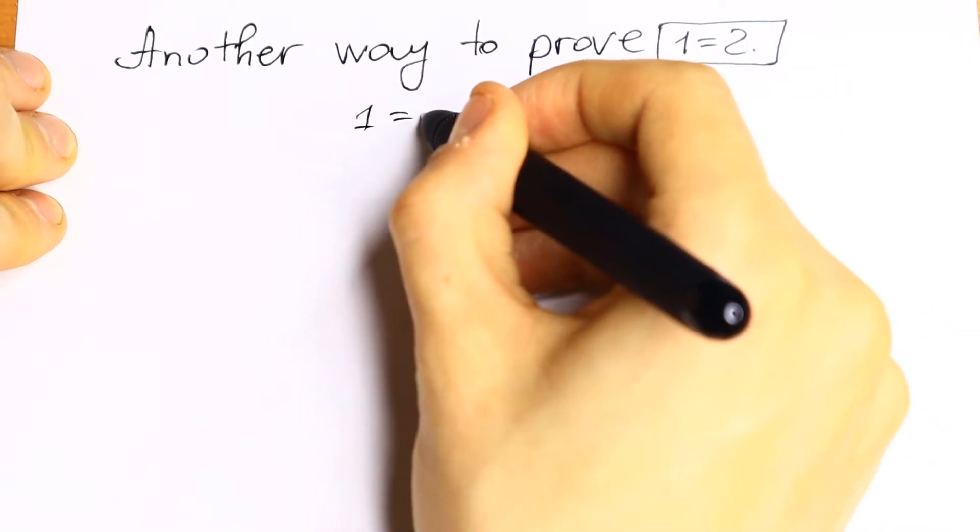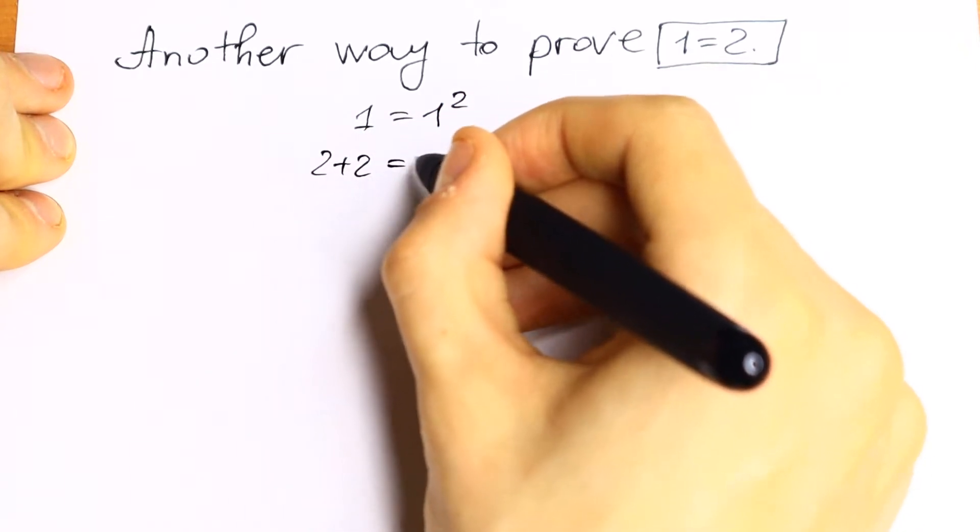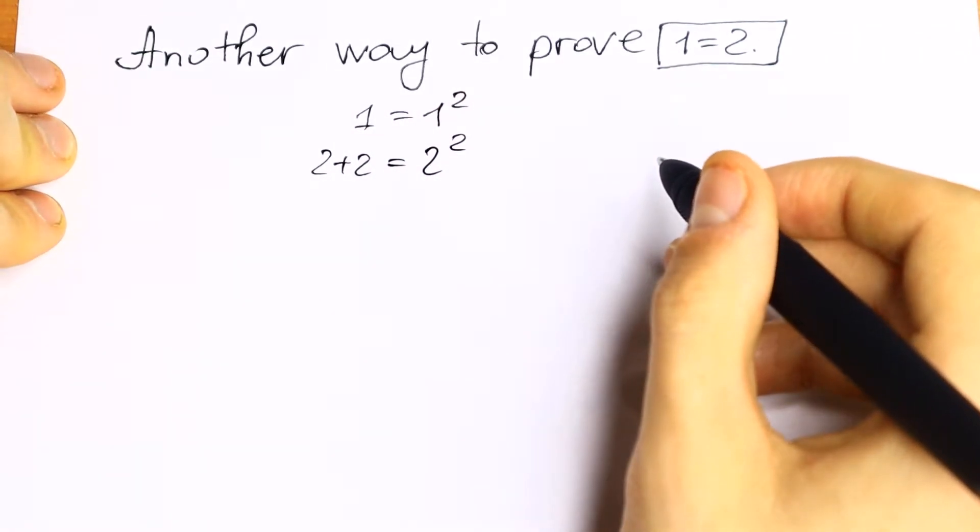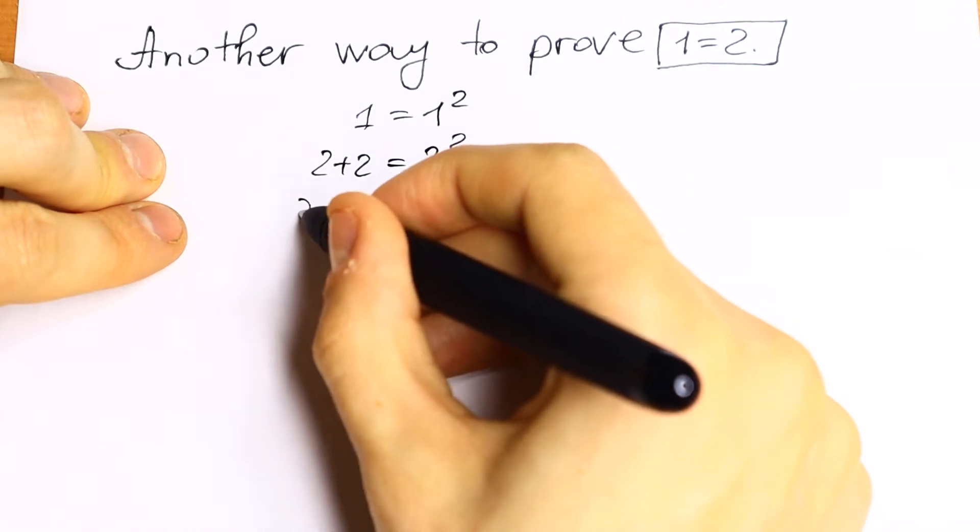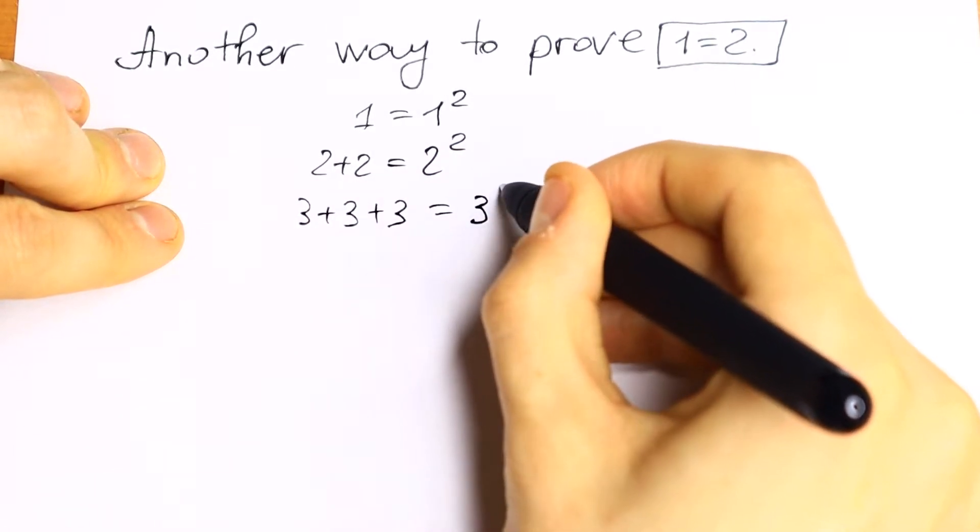So 1 equal to 1 square. This is correct. As you can see 2 plus 2 equal to 2 square. And let's do the same trick once more. So 3 plus 3 plus 3 equal to 3 square.